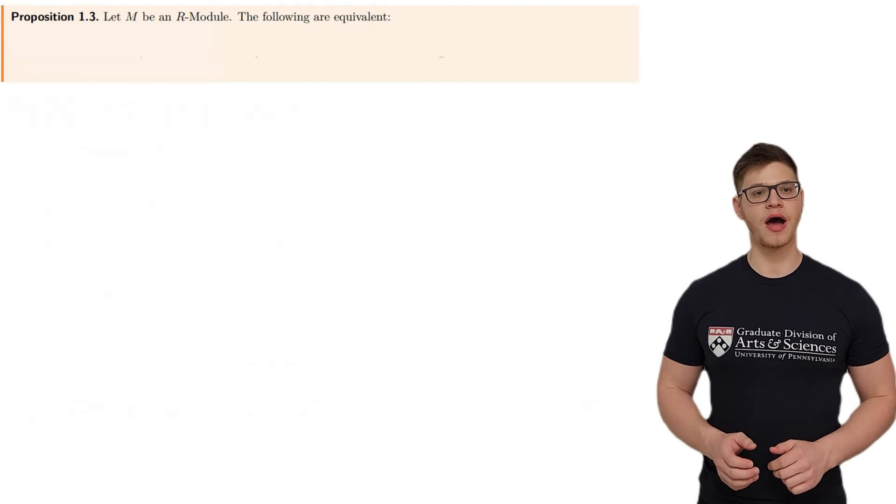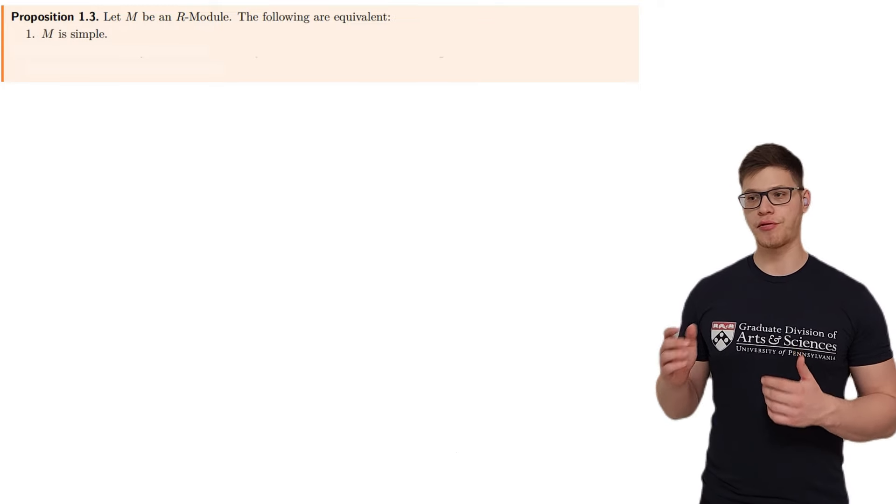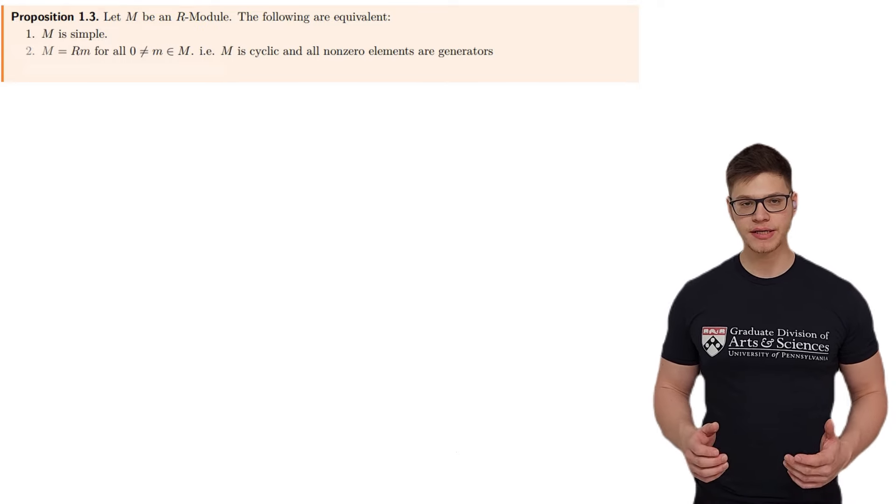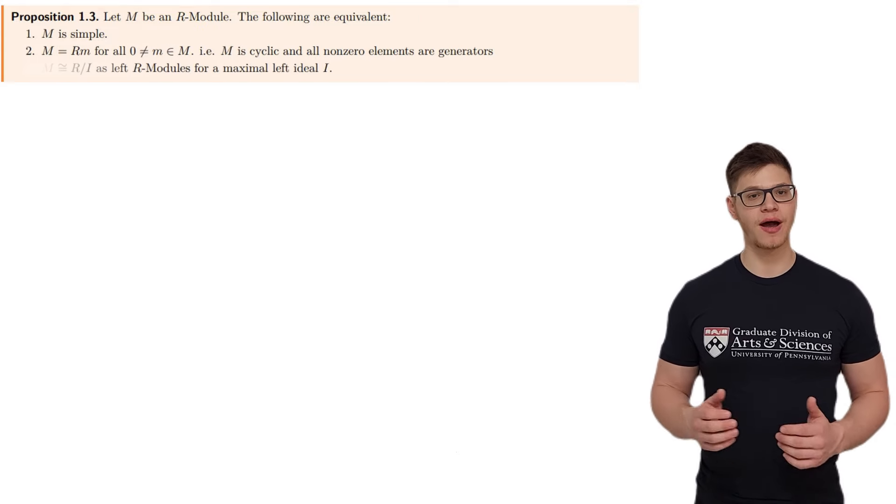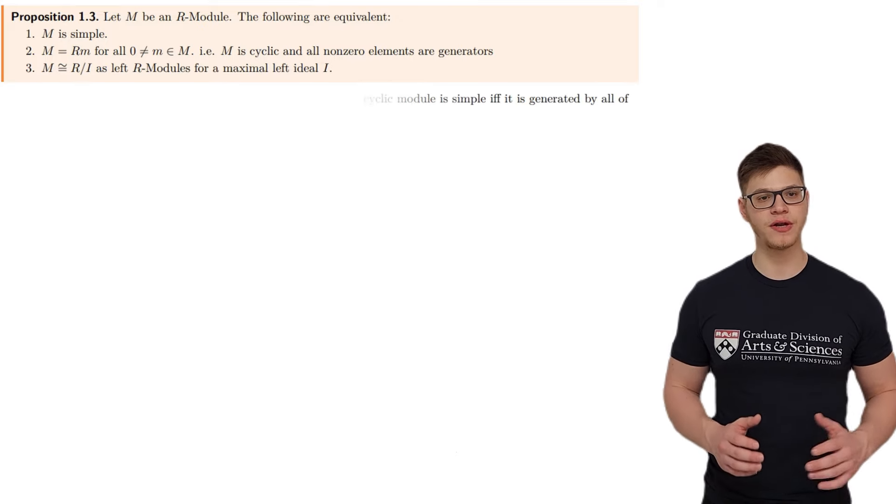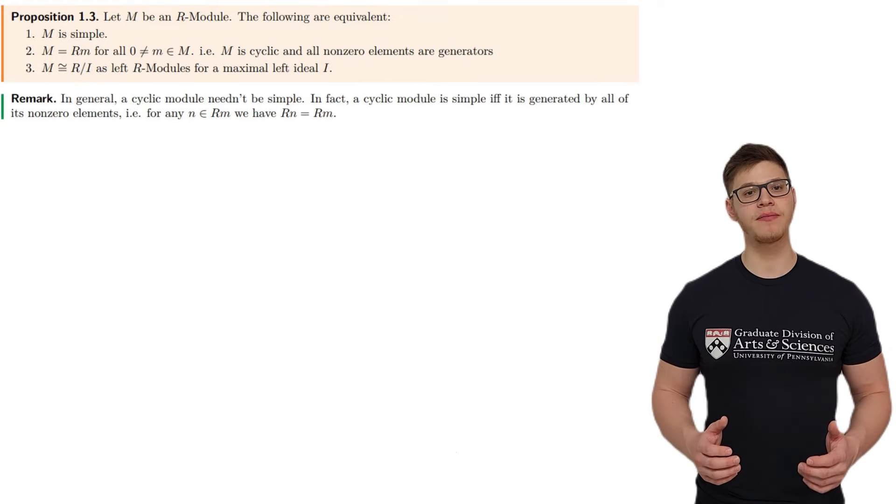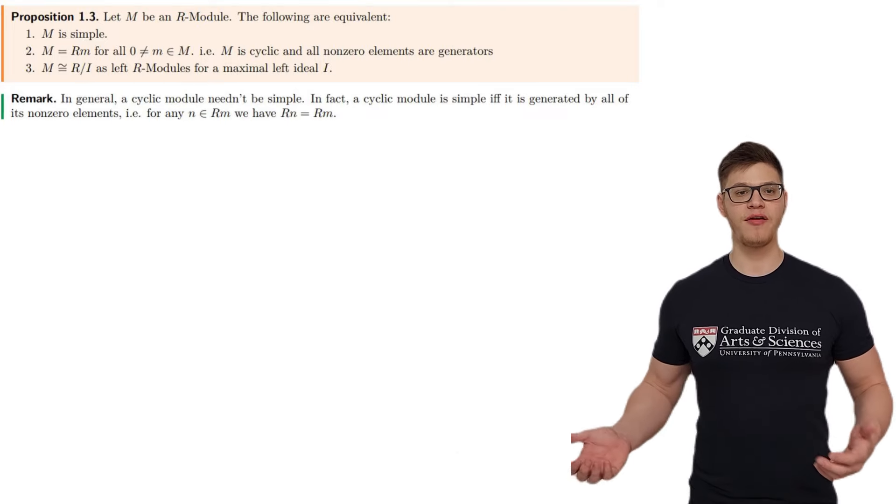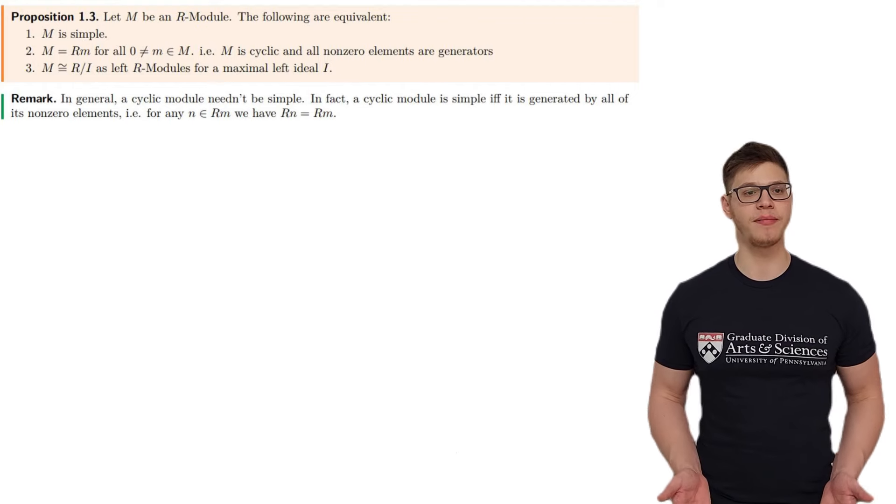Let M be an R-module. The following are equivalent: M is simple, M is cyclic and every non-zero element is a generator, and M is isomorphic to R mod I for a maximal left ideal I. It is important to note that in general, a cyclic module needn't be simple. In fact, a cyclic module is simple if and only if it is generated by every non-zero element.